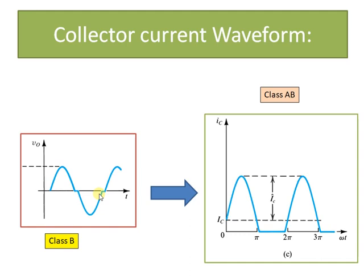In order to overcome this crossover distortion, we locate the operating point slightly above the cutoff. Since the Q point is located slightly above cutoff in class B but much below the center of the DC load line in class A, these kind of amplifiers are referred to as class AB amplifiers.